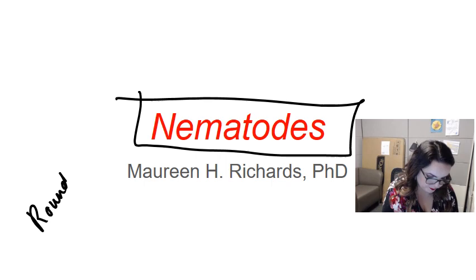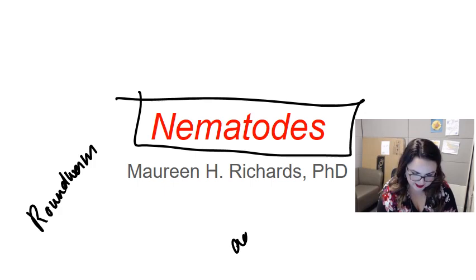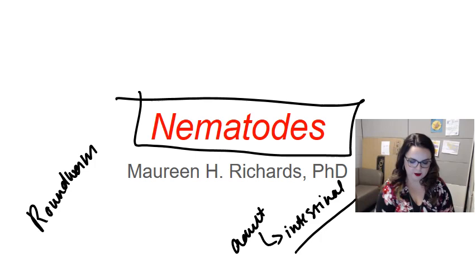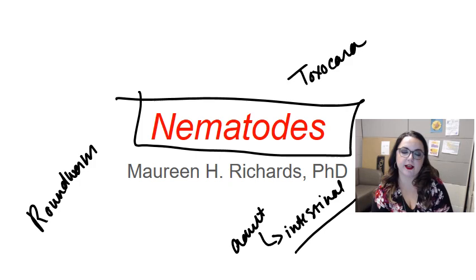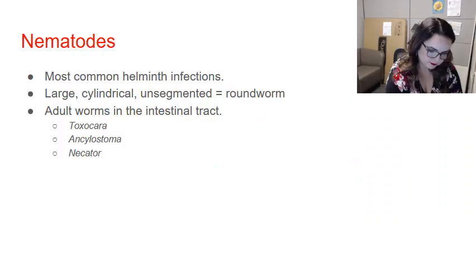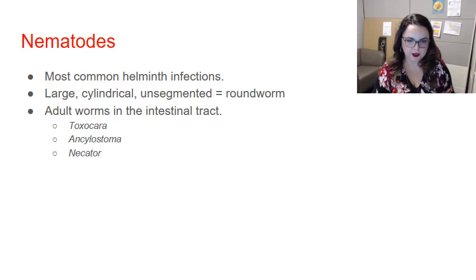These parasites live primarily as adult worms in the intestinal tract of permissive animals — parasites are very picky. Typically we figure out a patient has a nematode infection when they've voided eggs in the feces, or potentially even the worm itself. We're going to discuss three genera of roundworms: Toxocara (including T. canis and T. catti), Ancylostoma, and Necator.